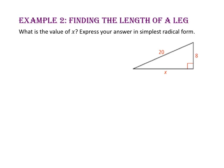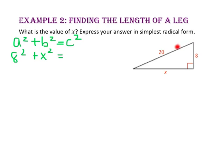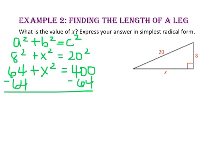In example 2, we will find the length of a leg. What is the value of x? Express your answer in simplest radical form. Since we have a right triangle and we know the length of two sides, let's start with the Pythagorean Theorem: a squared plus b squared equals c squared. Since 8 and x are the lengths of the legs, we will substitute those in for a and b. Since 20 is the length of the hypotenuse, we will substitute that for c. 8 squared is 64 and 20 squared is 400. Subtract 64 from both sides and x squared equals 336.